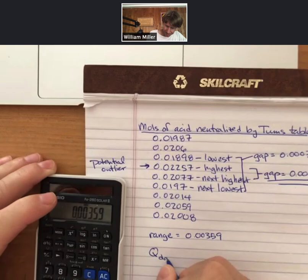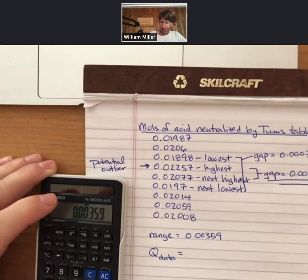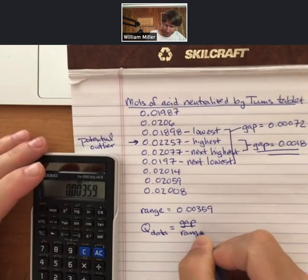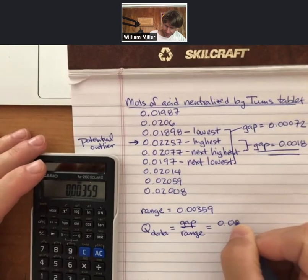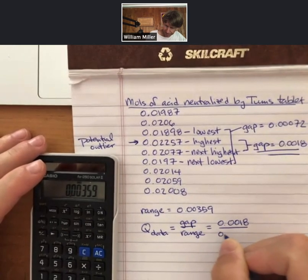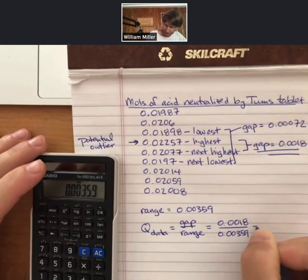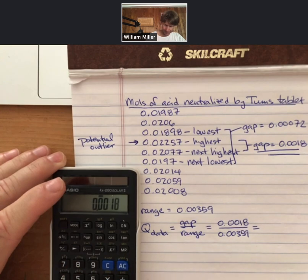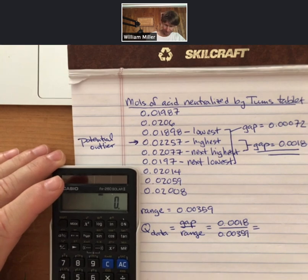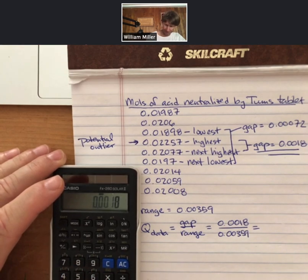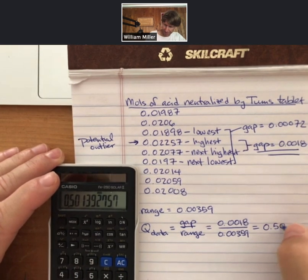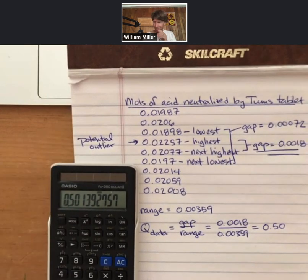Now Q data, which is going to be gap over range. Calculating my Q data, I get 0.50 with two sig figs.